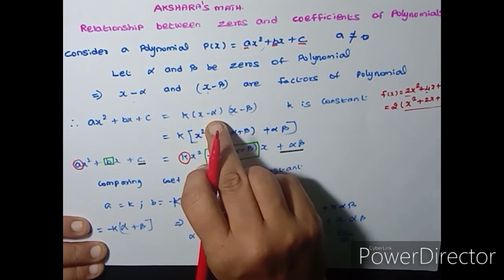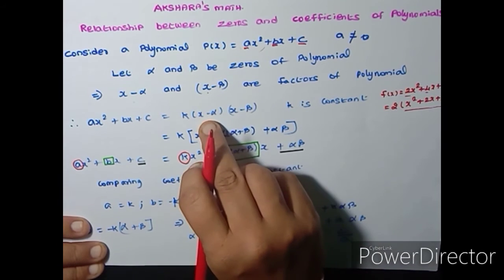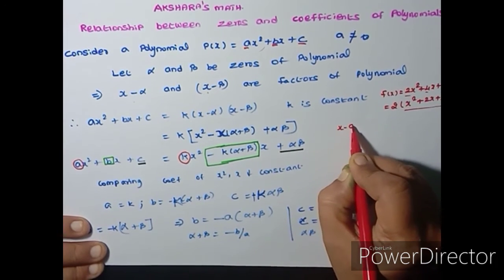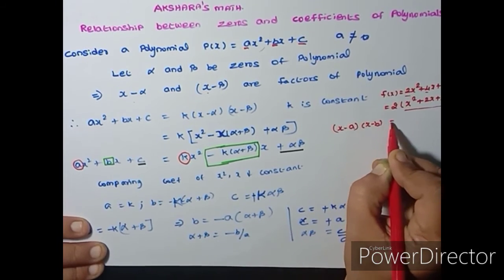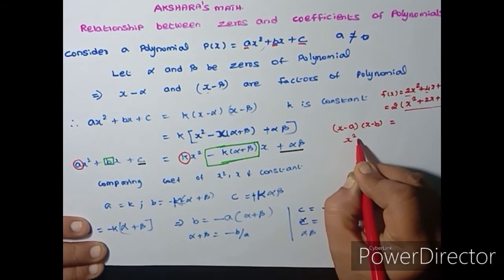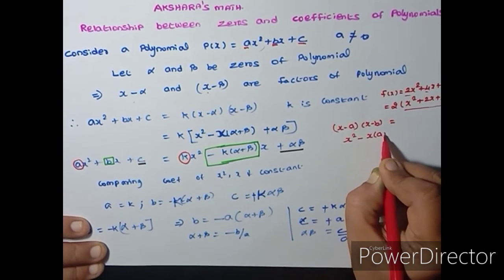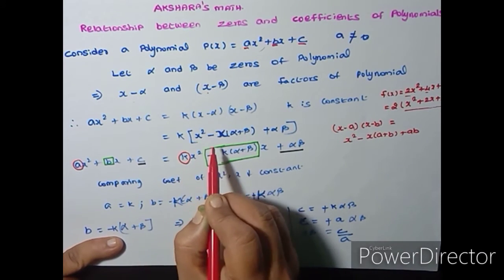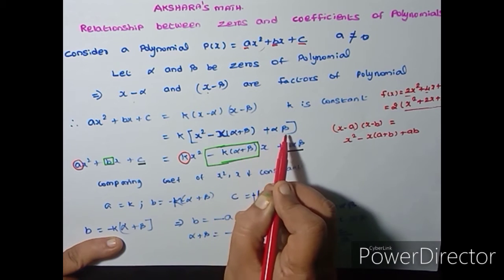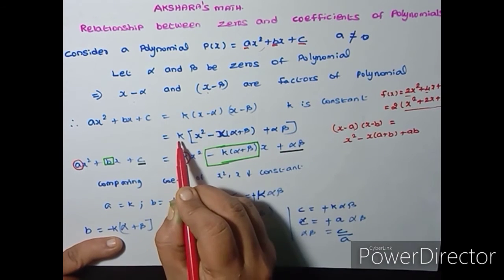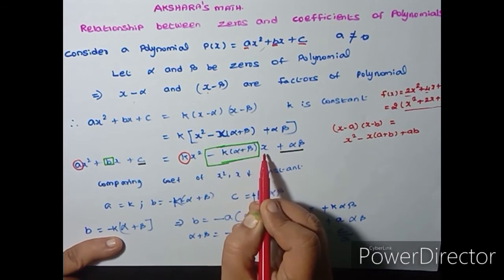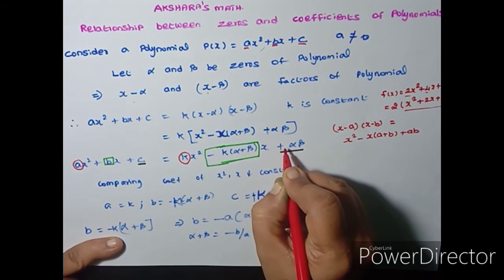So we have K times (X − alpha)(X − beta). I will multiply (X − alpha)(X − beta) using the identity: (X − A)(X − B) = X² − X(A + B) + AB, which I studied in 9th standard. Using this identity, I get X² − X(alpha + beta) + alpha·beta. Multiplying everything by K gives: Kx² − K(alpha + beta)x + K·alpha·beta.